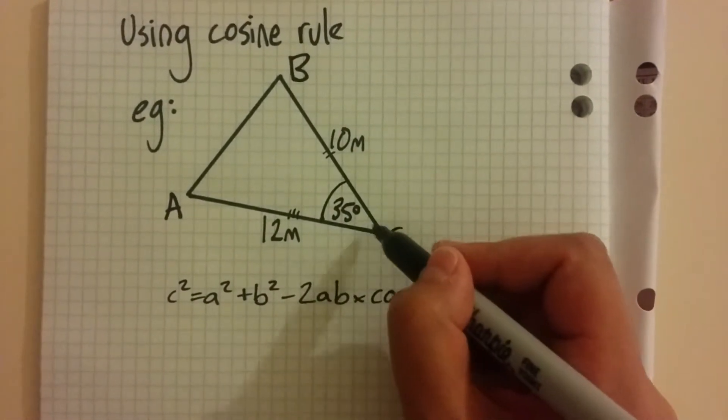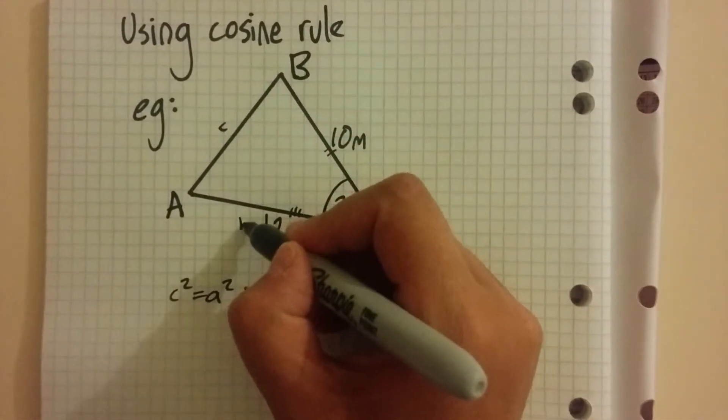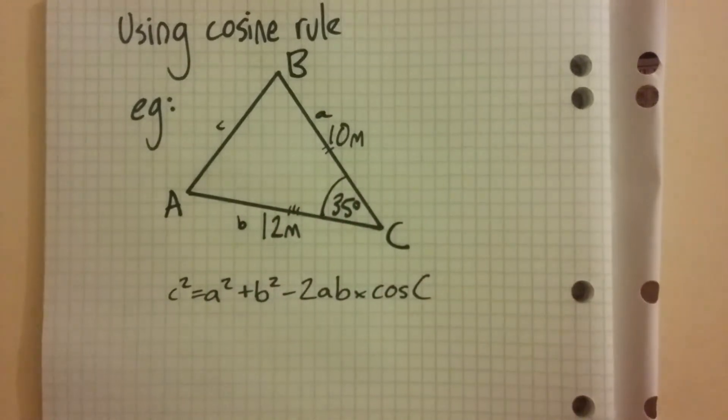The side opposite C has a lowercase c, opposite B is lowercase b, opposite A lowercase a.